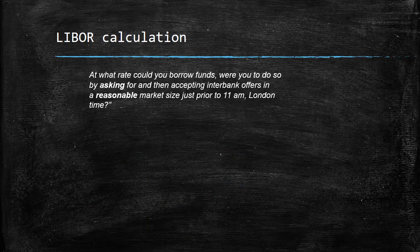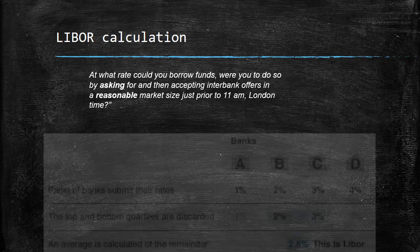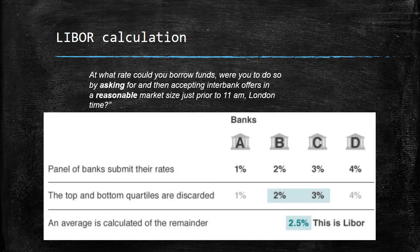A simple example: every morning at 11 AM London time, this question is asked to the 18 banks: 'At what rate could you borrow funds, were you to do so by asking for and then accepting interbank offers in reasonable market size?' Let's assume only four banks are in the market. Bank A submits 1%, B submits 2%, C submits 3%, and D submits 4%. The top and bottom quartiles — A and D — are discarded. The average of 2% and 3% gives a LIBOR rate of 2.5%, which is then fed into the various core banking systems to calculate loan schedules.